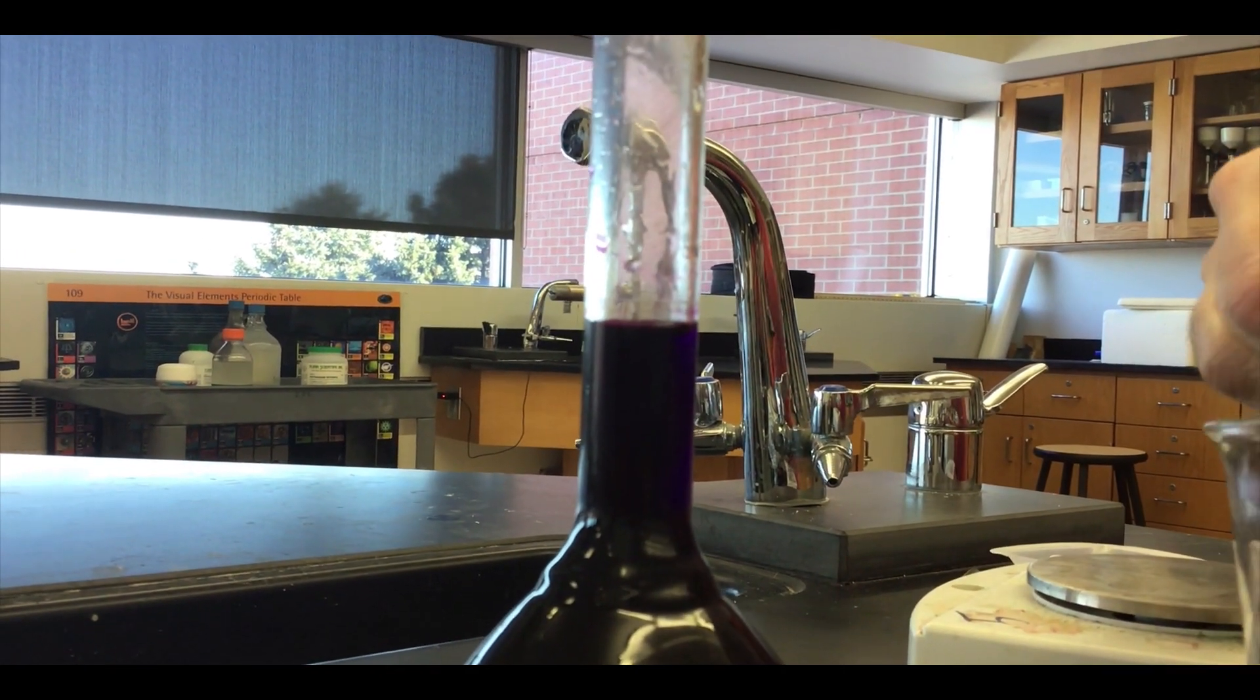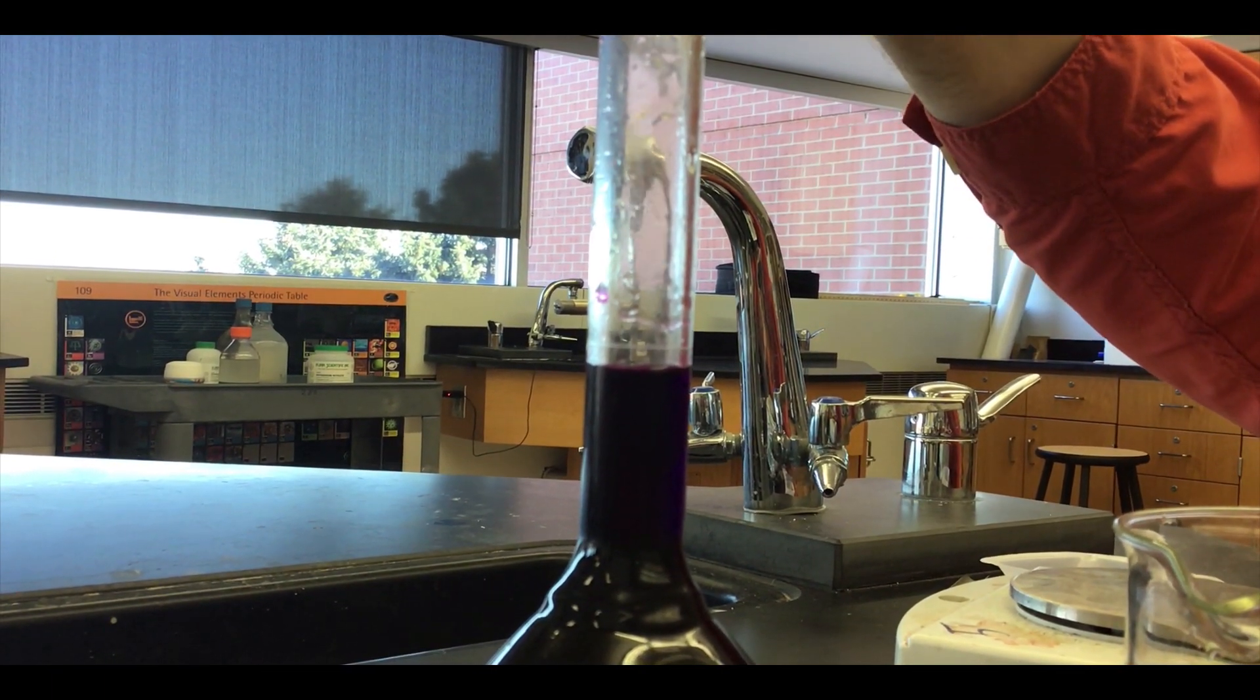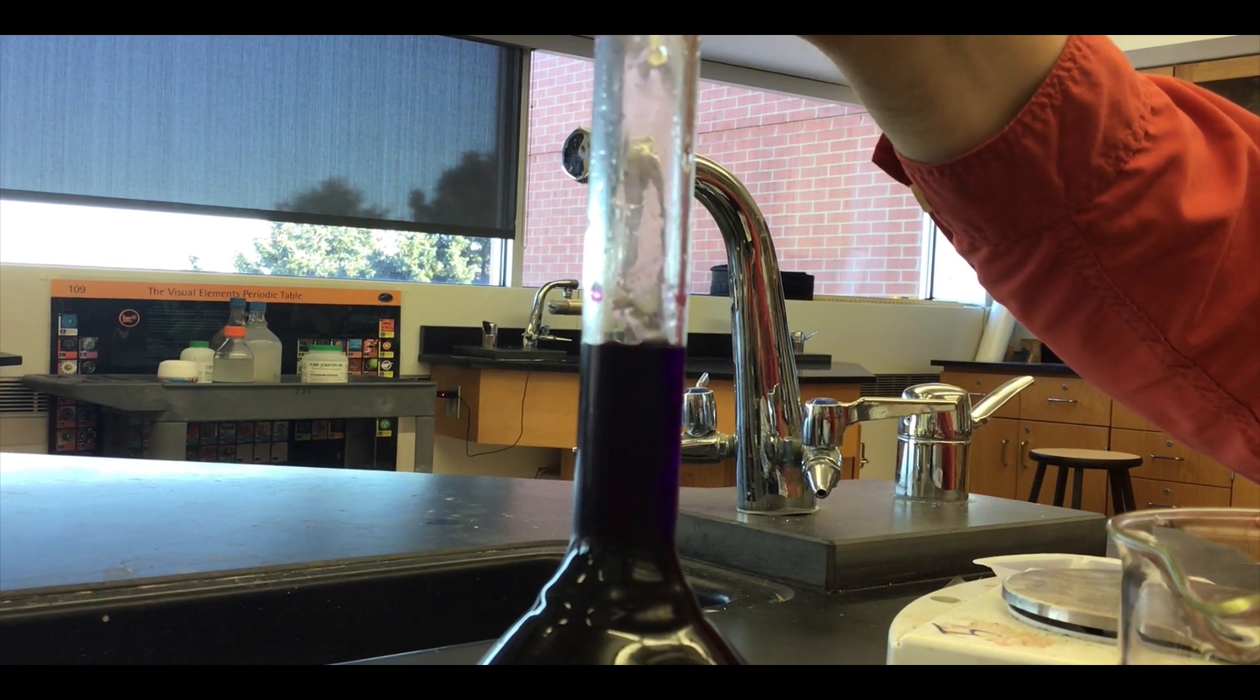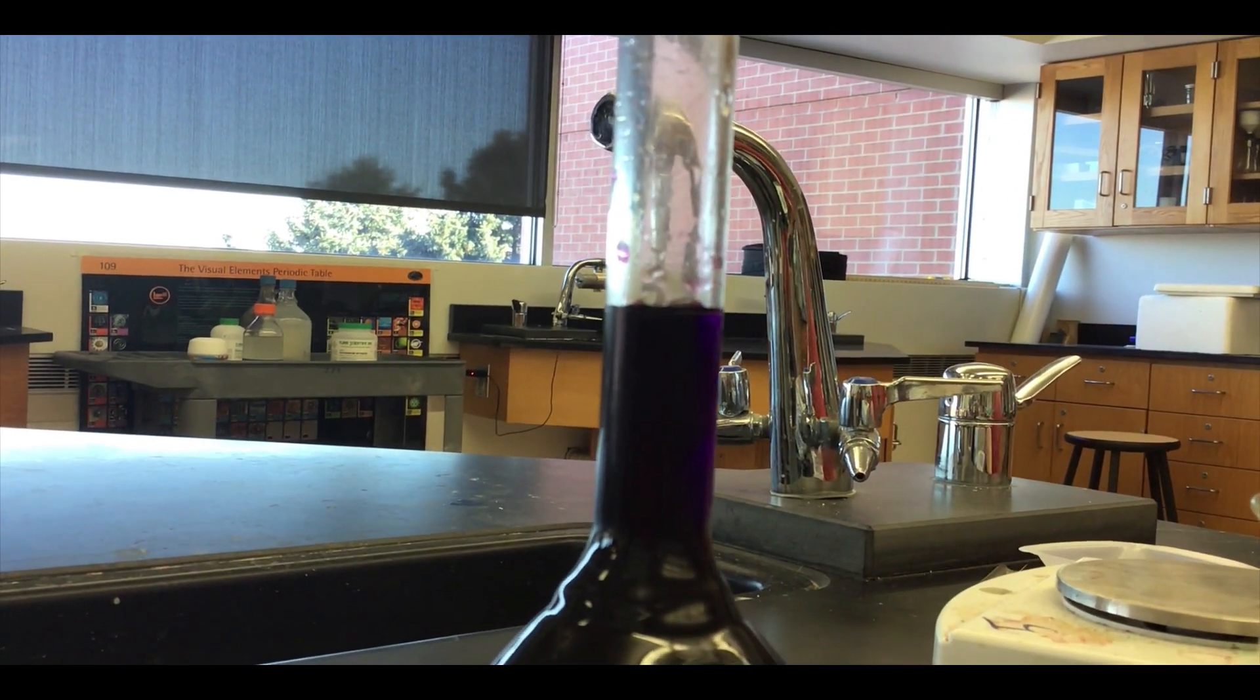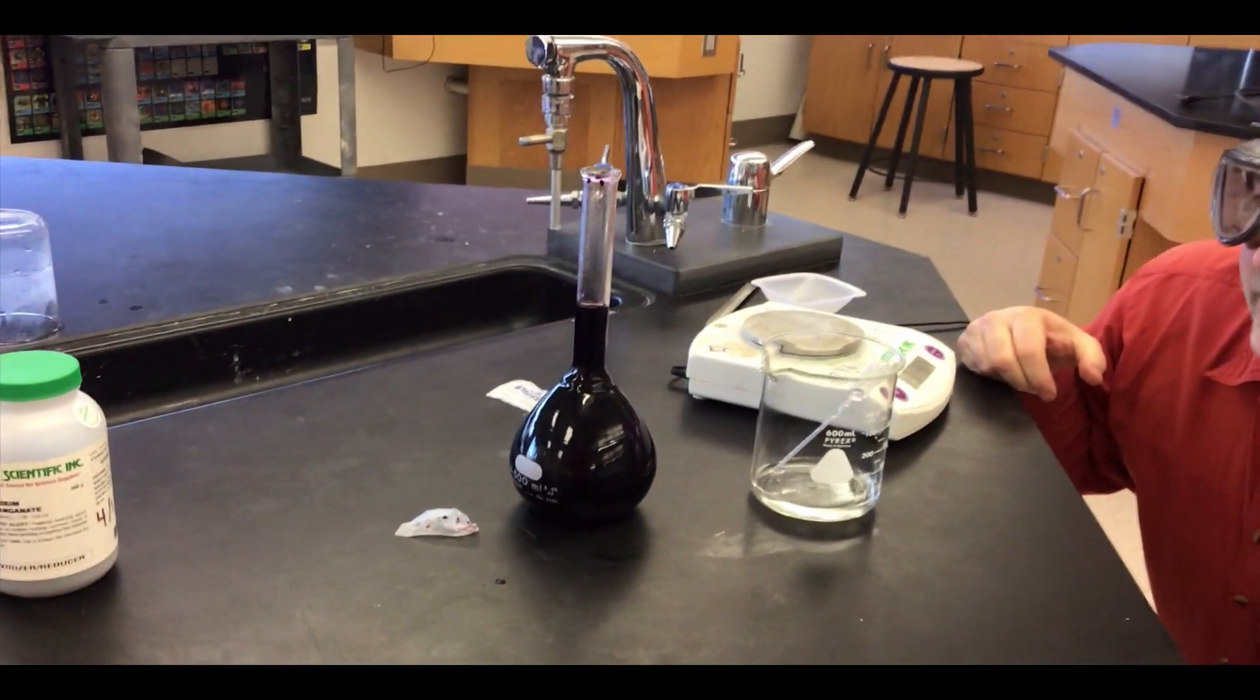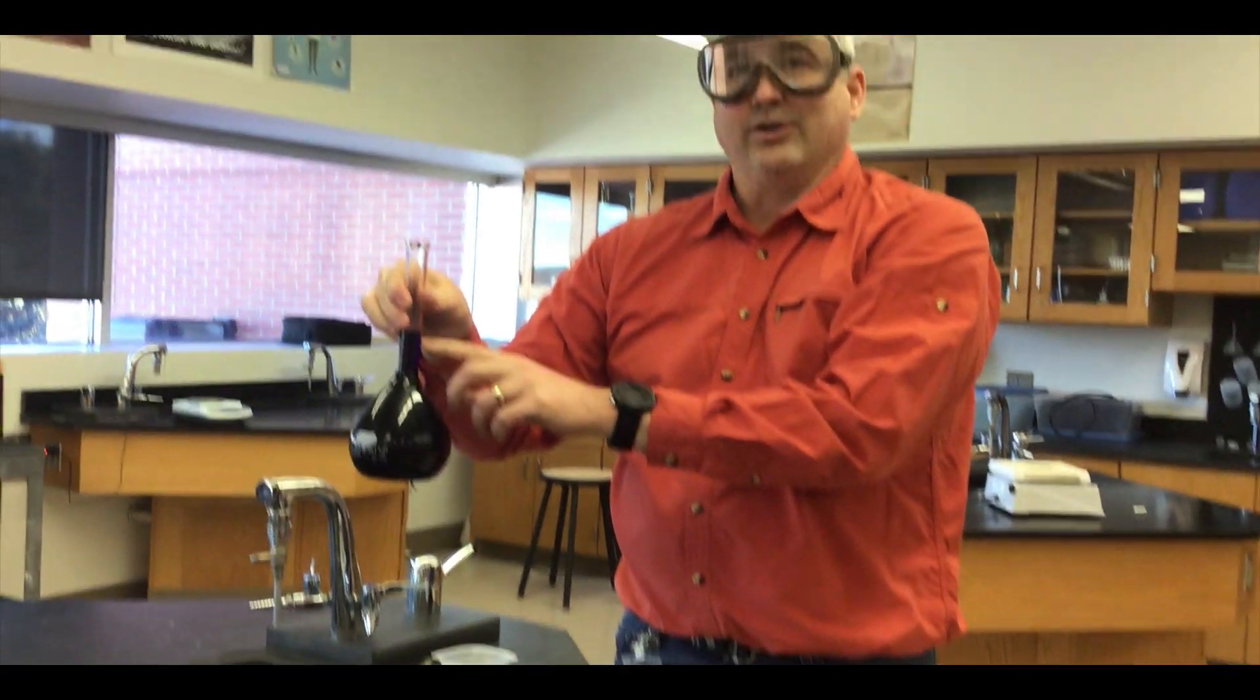And here of course you want to look at the meniscus, so you got to get down to the level of that. This is a difficult solution because it's so dark to see where the meniscus is, but slowly add a little of the solvent until the meniscus is at the line. All right, so now I have my 1.1 molar potassium permanganate solution and I have 500 milliliters of it and I know that it's measured to the right volume. I know the moles in there so I have the correct concentration.